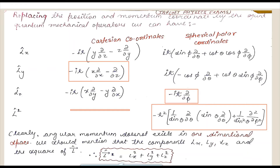The representation of L² in spherical polar coordinates is: L² = −ħ² [ (1/sinθ) ∂/∂θ (sinθ ∂/∂θ) + (1/sin²θ) ∂²/∂φ² ]. This is the representation of L² in spherical polar coordinates. As we know, angular momentum cannot exist in one-dimensional space. We should mention the components Lx, Ly, Lz and L².